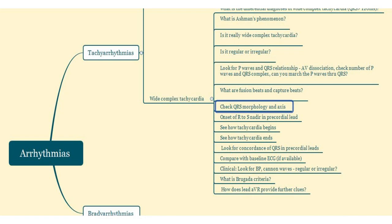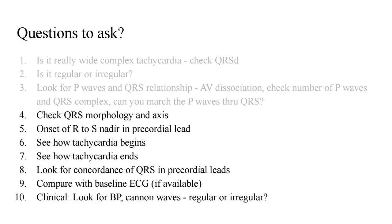For mind mapping today's video, here are the questions for today, starting from checking the QRS morphology and axis. These are all the questions you have to ask yourself when tackling an ECG with wide complex tachycardia, in addition to the first three questions from part 1. Here is an overview of all these questions. We've already dealt with the first three, so let's start tackling the others.